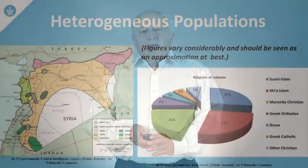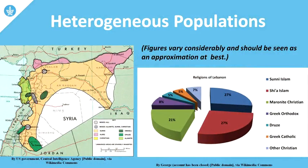Looking at the Fertile Crescent, one should compare it to Egypt in terms of topography and demography. As opposed to Egypt, which has a very homogeneous population, the populations of the Fertile Crescent in countries like Lebanon, Syria, and Iraq are very heterogeneous. These are countries characterized by large populations of various different minorities, which makes the formation of a cohesive state a lot more difficult than in Egypt.